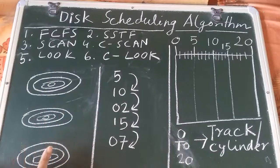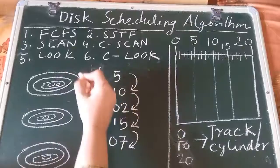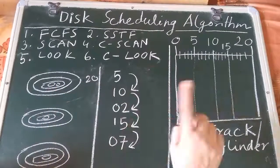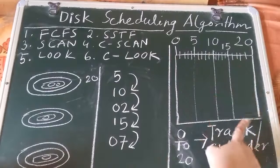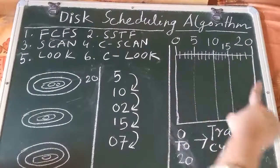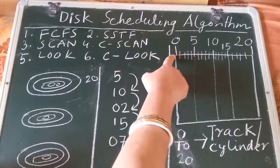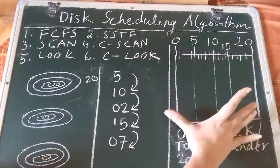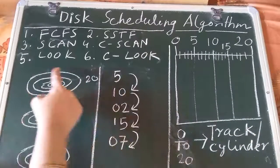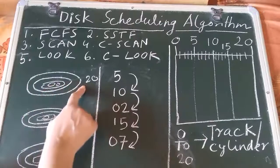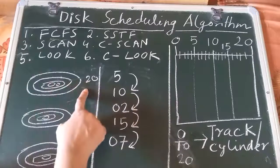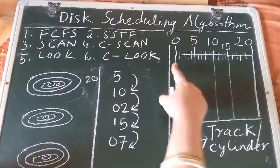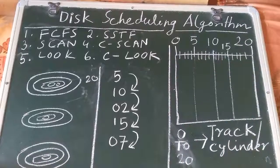There are many tracks in the platter, as we have already discussed. Here, if I give the innermost track as track zero and the outermost track as track 20, the convention is to draw a rectangular line where the initiation is at zero and the ending is at track 20. This rectangular box represents the disc, which has tracks numbered 0 to 20, with lines denoting each track.